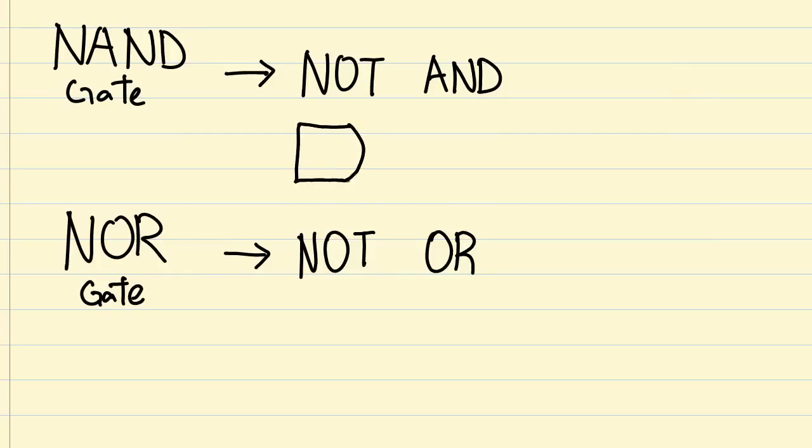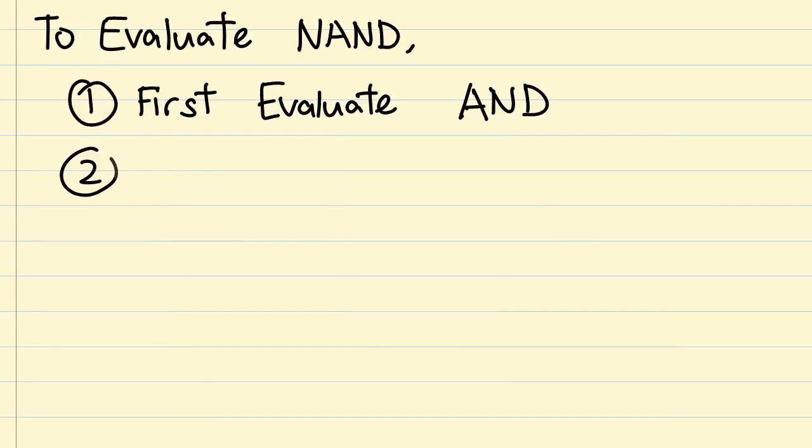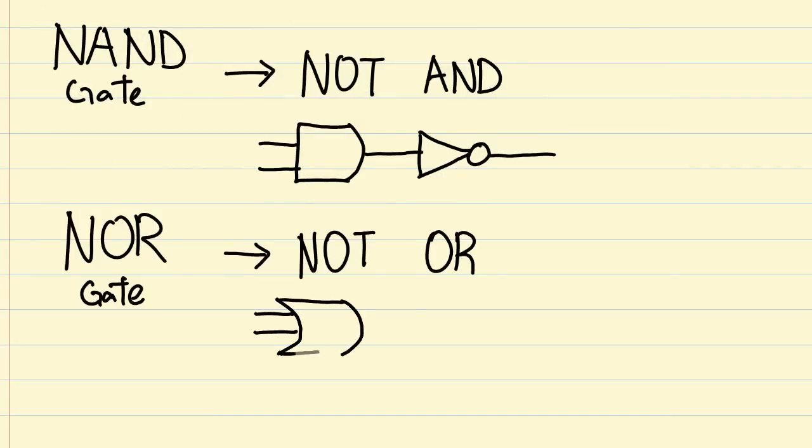A NAND gate is basically an AND gate wired to a NOT gate. So the evaluation of the inputs is done in the exact same way as the AND gate does it, except you invert the result. The same premise goes for the NOR gate.